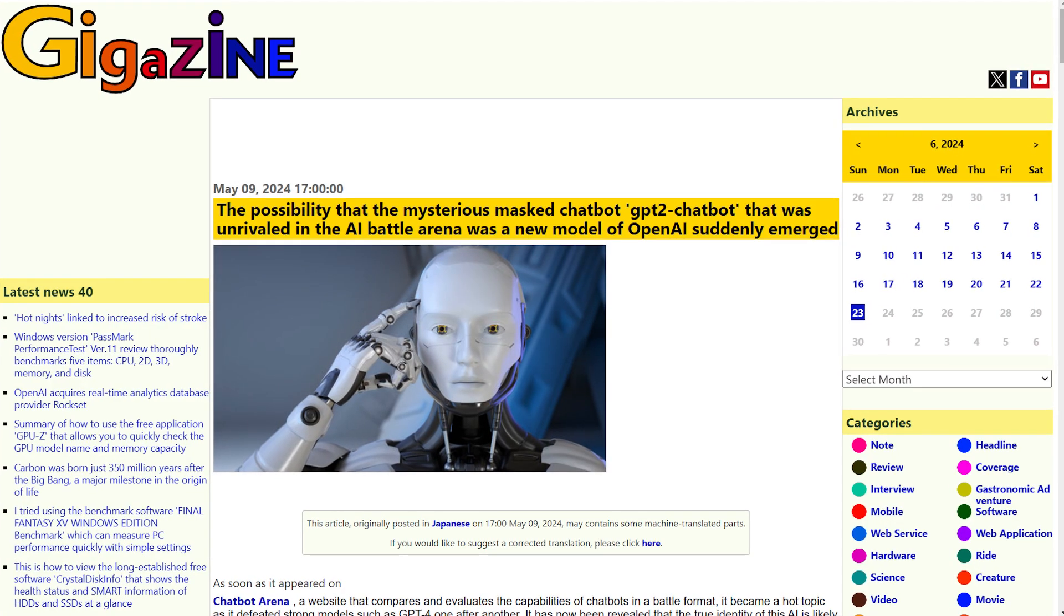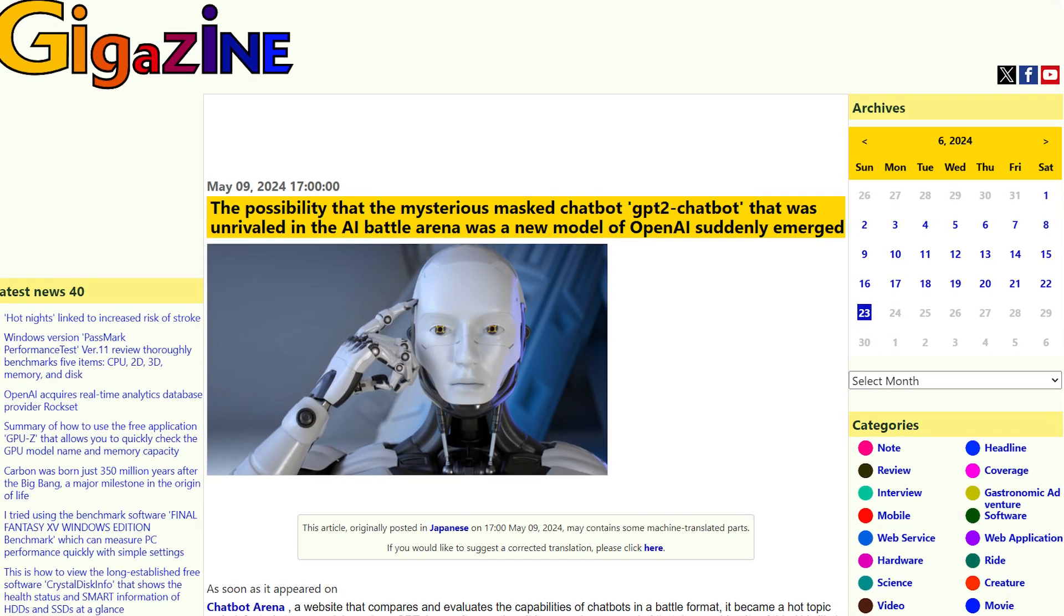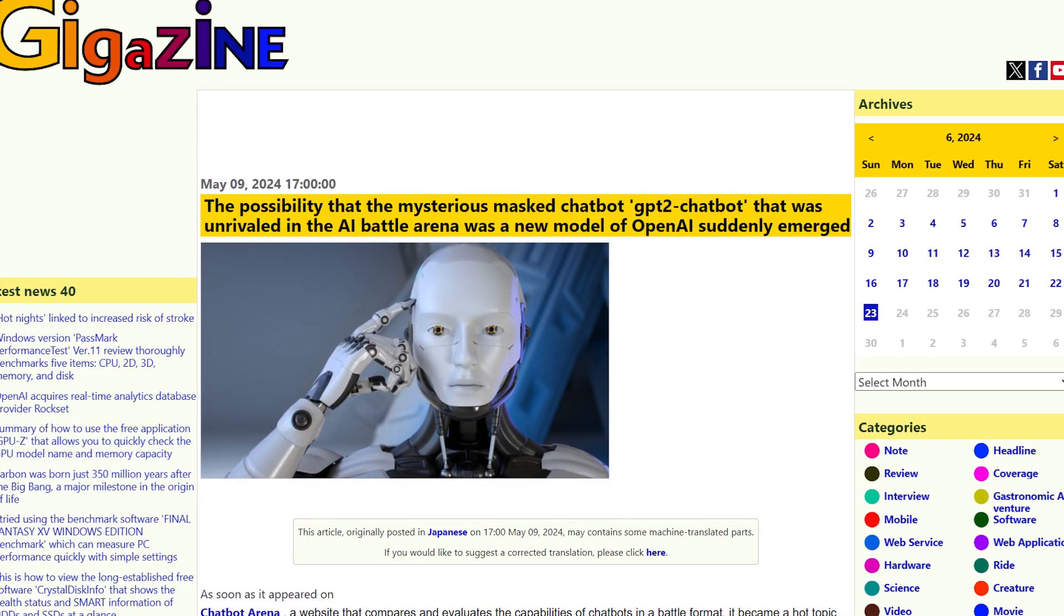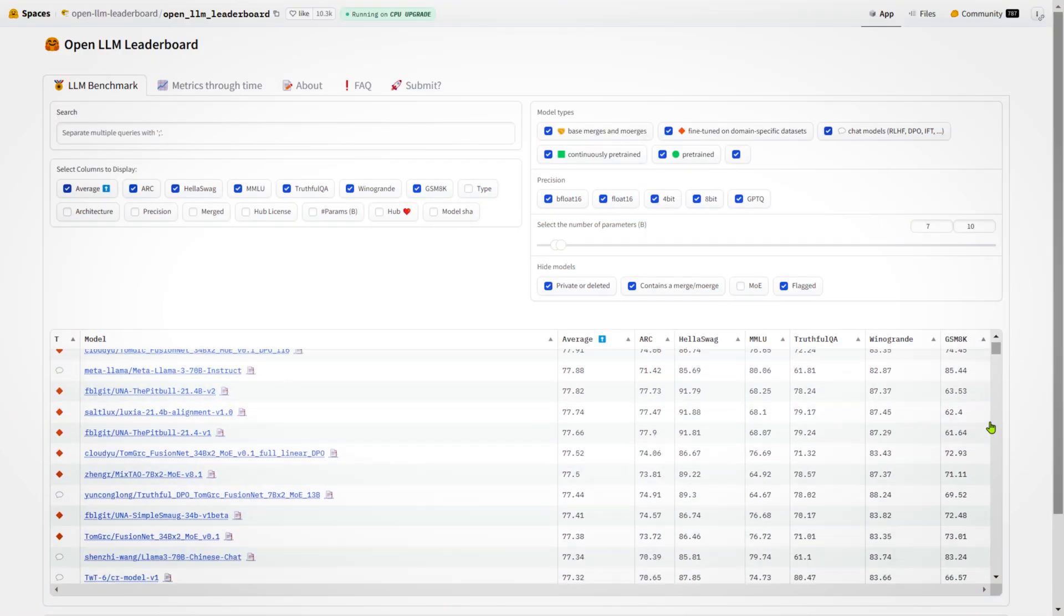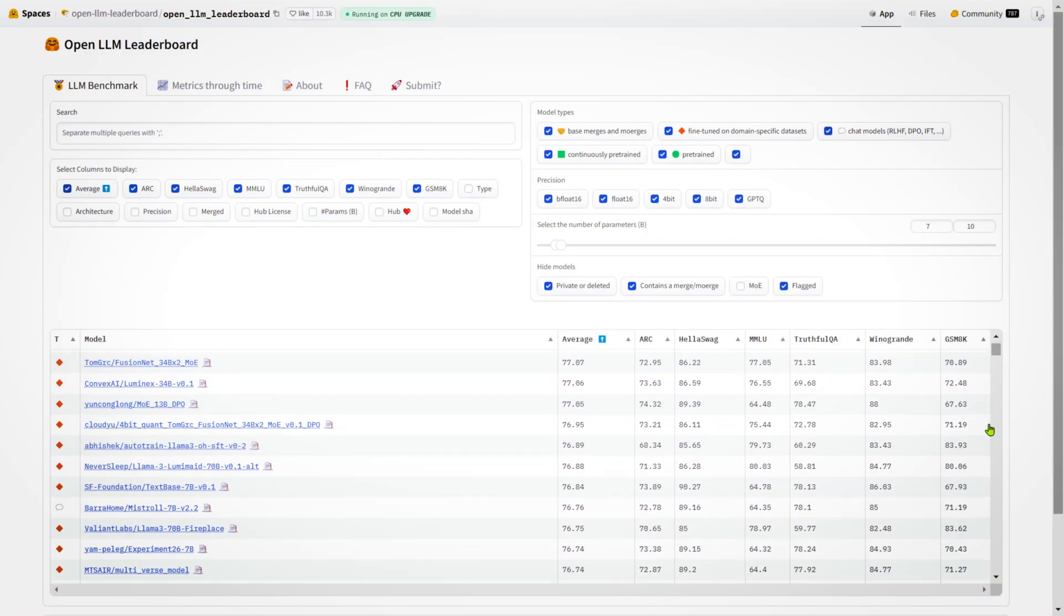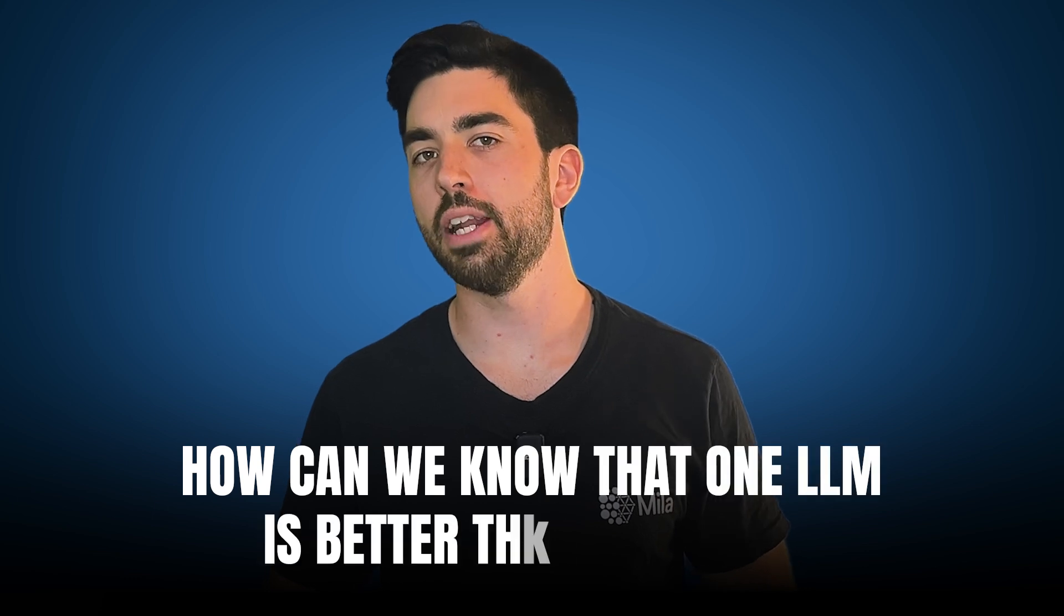We always see LLMs beating all benchmarks, like the recent mysterious GPT-2 chatbot beating all models, which was actually GPT-4-0. You may have heard similar claims about some models outperforming others in popular benchmarks like those on the Hugging Face leaderboard, where models are evaluated across various tasks. But how can we determine which LLM is superior exactly? Isn't it just generating words and ideas? How can we know one is better than the other? Let's answer that!